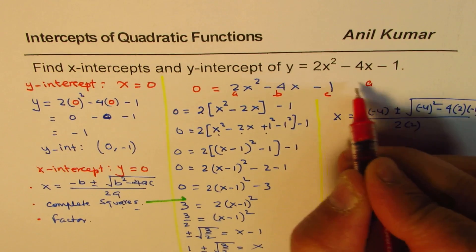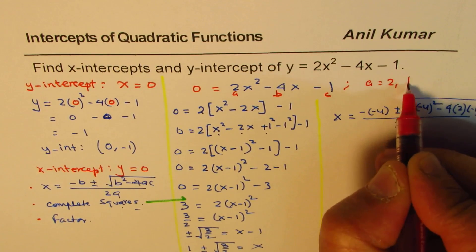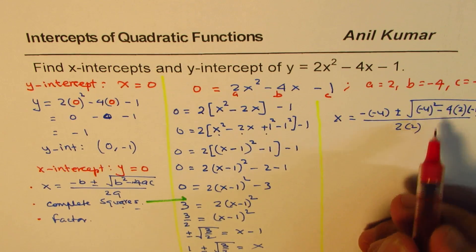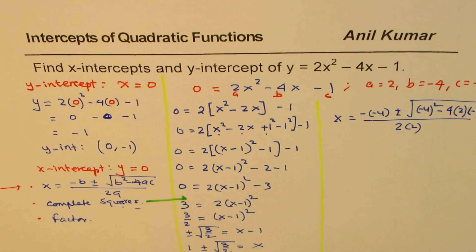So remember here, we are given a equals 2, b equals minus 4, and c equals minus 1. Substitute this value, use this formula, and get the answer.